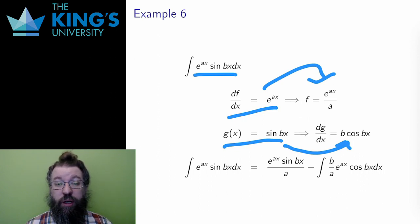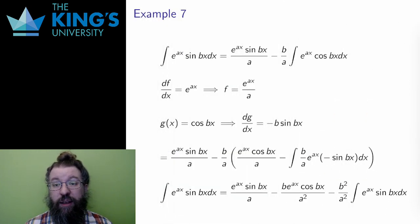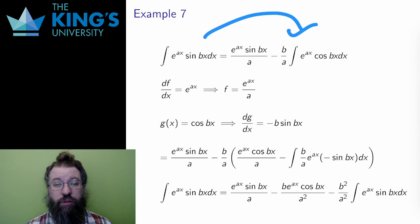Then I apply integration by parts. The first term, fg, is e to the ax times sine bx over a, and the integral is b over a times e to the ax cos bx. Alright, so I did integration by parts, and I essentially exchanged the sine in the integral for a cosine. The b over a is a constant, which I pulled out of the integral.